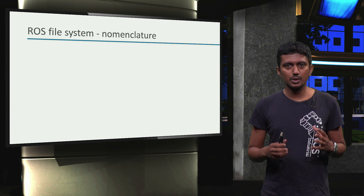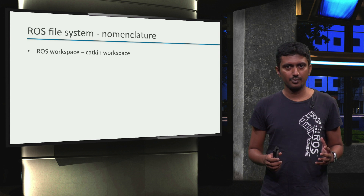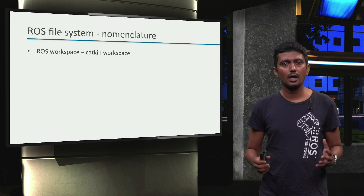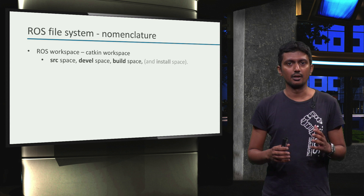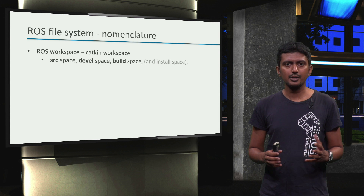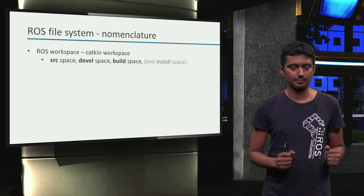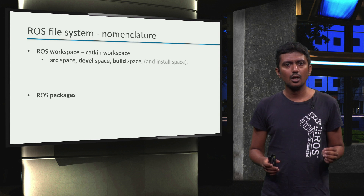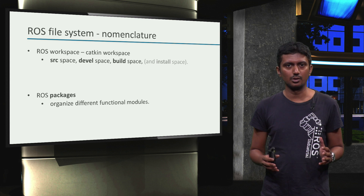Let me begin with introducing two terms used in the ROS file system. First, a ROS workspace — in particular, a CATKIN workspace. Within the context of a ROS workspace, there is a source space, a devel space, a build space, and an install space, which we will not focus on in this course. The second term is ROS package, which can be used to organize different functional modules in a ROS software application.